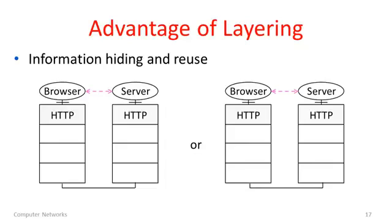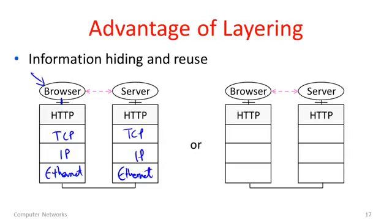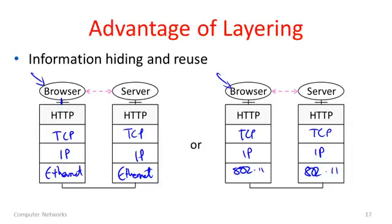Now let's see how we can gain advantages from layering. The key advantage is information hiding and through that, reuse. Imagine our browser and server application — you could run it on a protocol stack like HTTP, TCP, IP, and Ethernet. Or you could run the same web browser on a different protocol stack: TCP, IP, and 802.11 for a wireless host. The web browser doesn't know or care what it's running on at the lower layer. It would be terrible if we had to write our web browser differently depending on all the details of the protocol stack. By hiding information, we get powerful reuse.